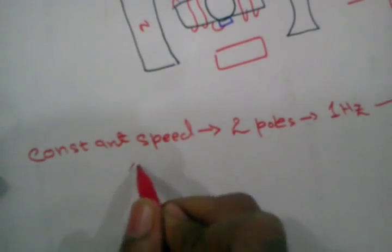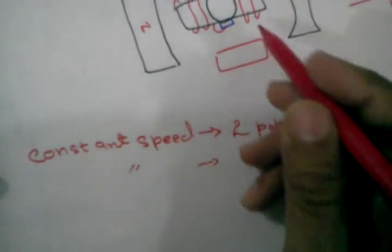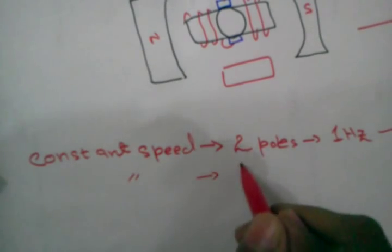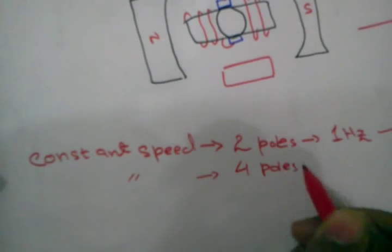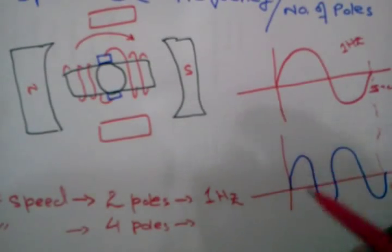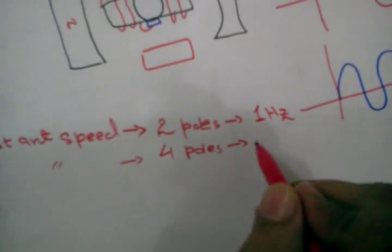So if we take again constant speed and if we increase the number of poles to four poles, we have seen that its frequency will be doubled, so two hertz.